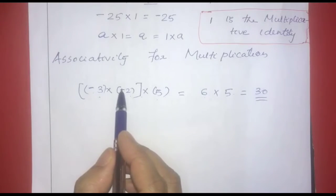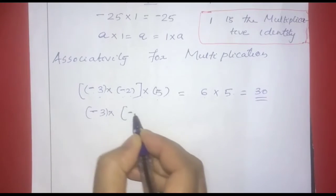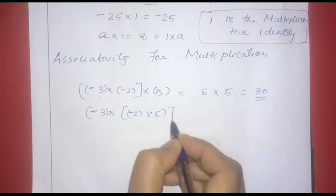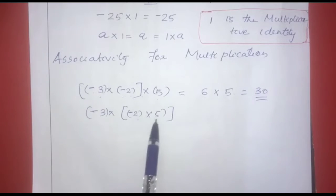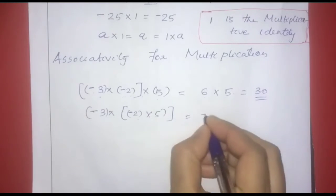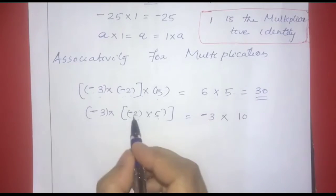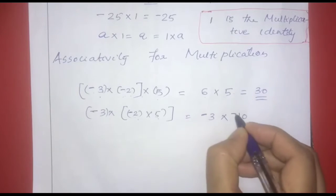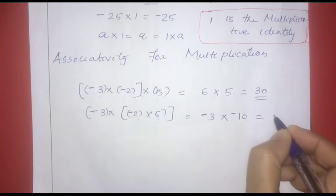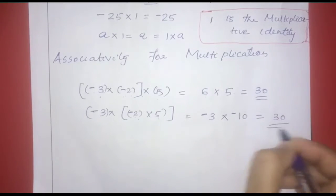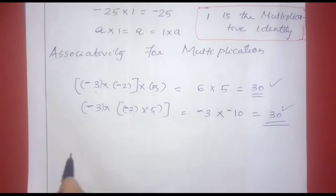Now we multiply negative 3 into negative 2 into 5. First multiply negative 2 and 5: that gives negative 10. Then negative 3 into negative 10 gives positive 30. Both groupings give 30. This satisfies the associative property.